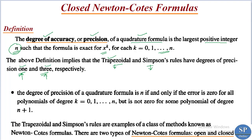The degree of precision of a quadrature formula is n if and only if the error is 0 for all polynomials of degree k = 0, 1, 2, 3, etc. up to n, but it is not 0 for some polynomial of degree n+1. That means if the precision of a quadrature formula is n, the error term will be 0 for polynomials of degree 0, 1, etc. up to n, but is non-zero for some polynomial of degree n+1. This is an if and only if condition.